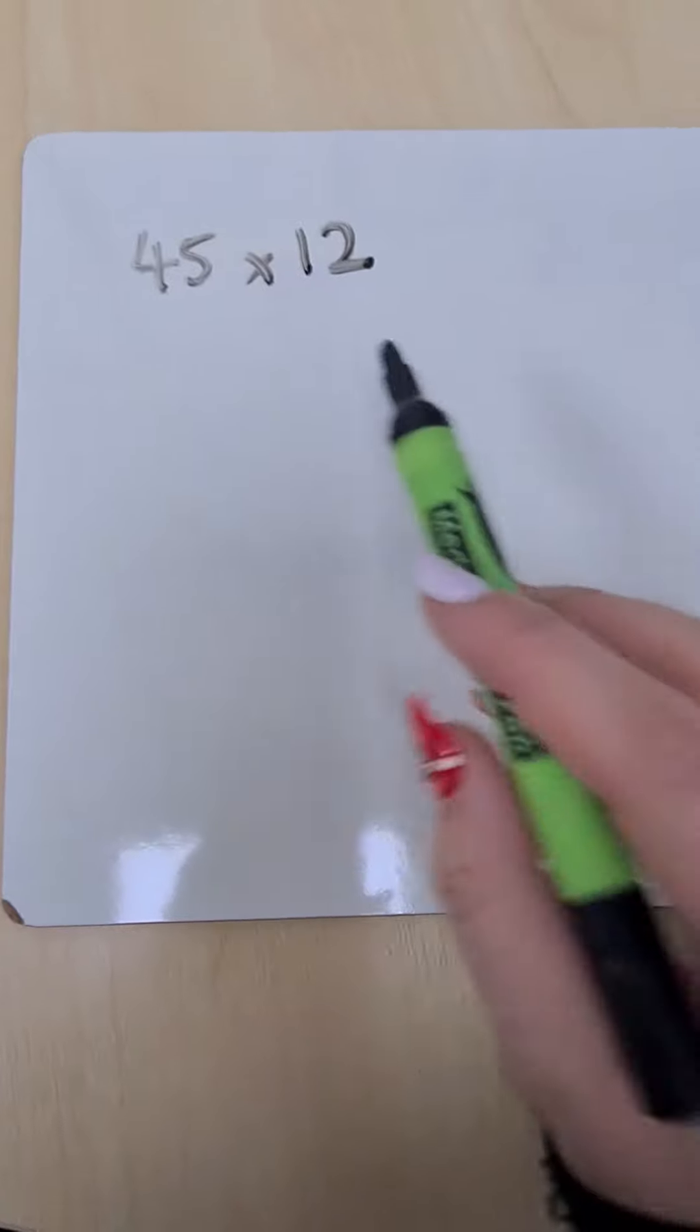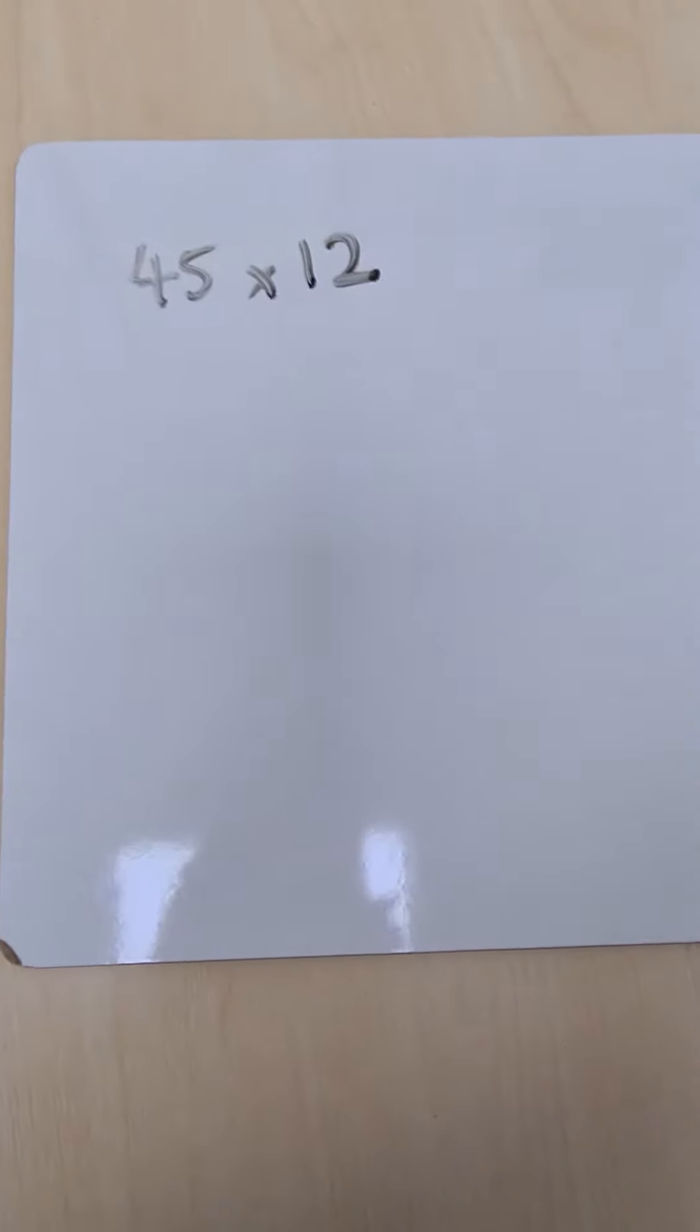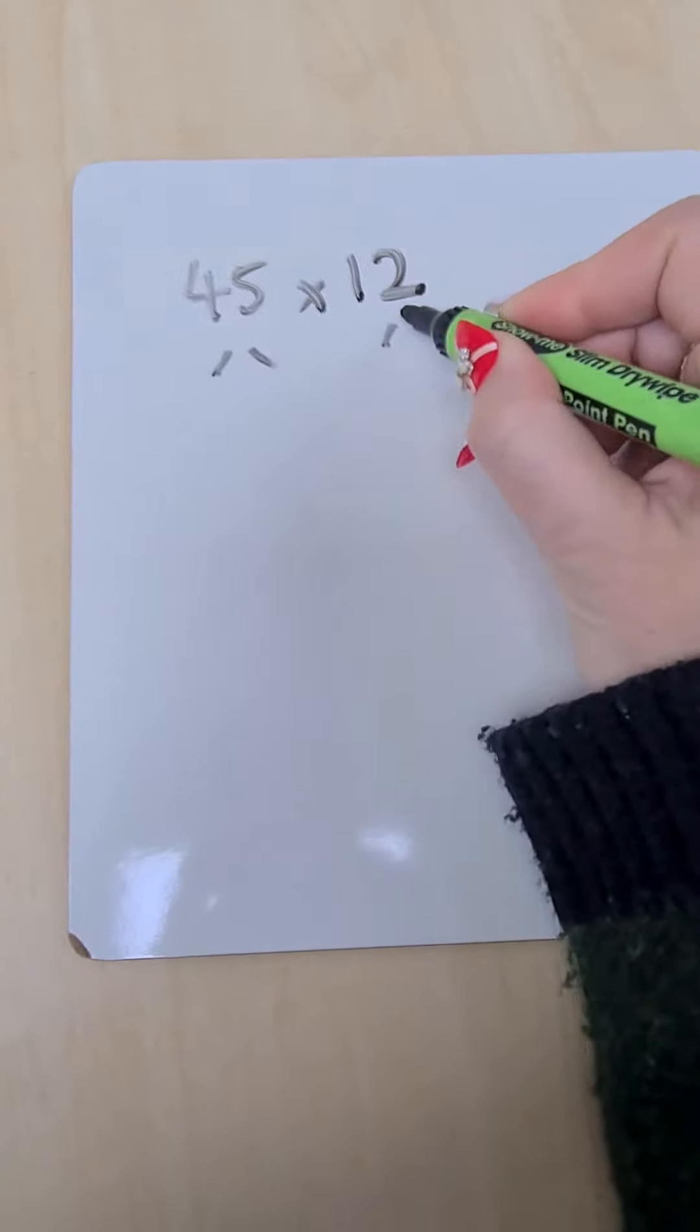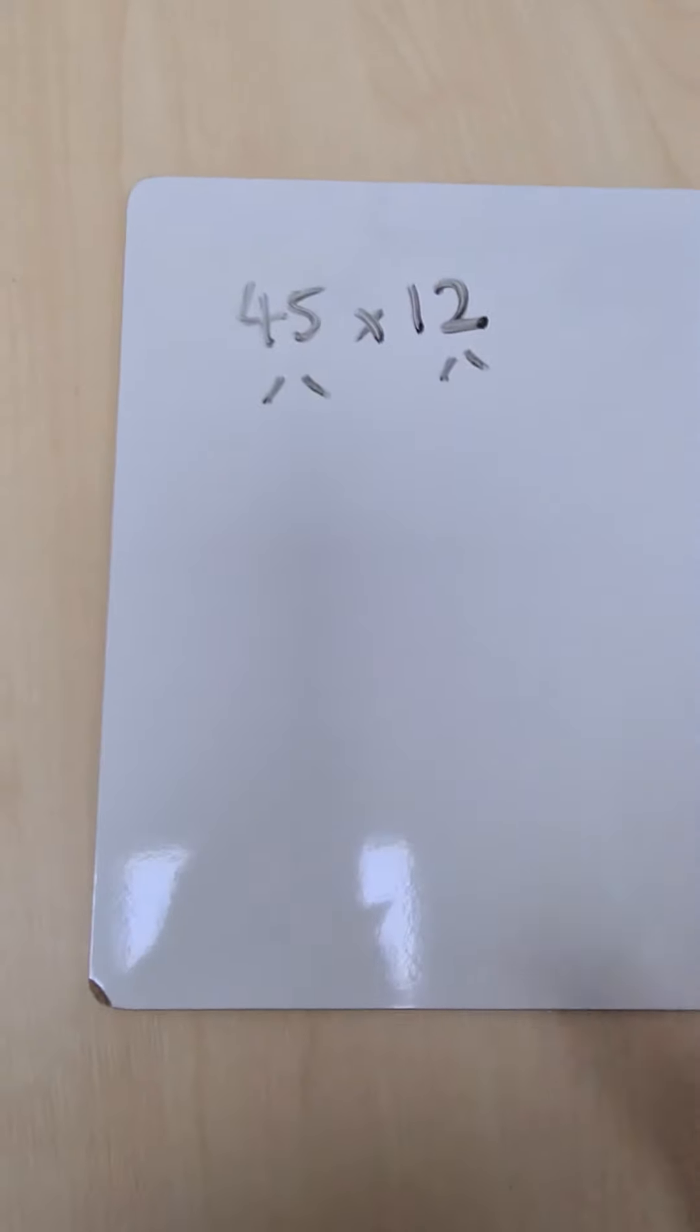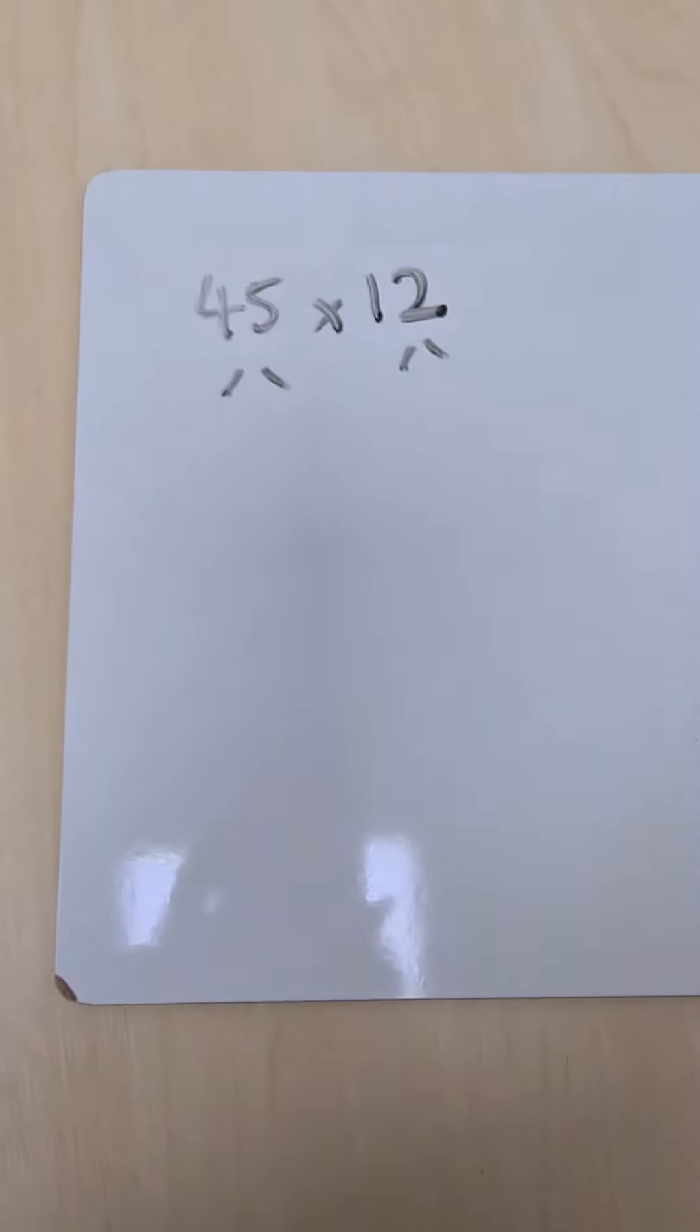In previous videos I've modeled two digits times one digit. Now we need to consider partitioning these two numbers into tens and units. Partitioning means separating.